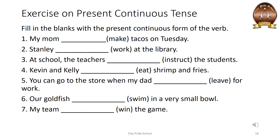Now let's test our knowledge by solving this exercise. Fill in the blanks with the present continuous form of the verb. First sentence: 'My mom dash make tacos on Tuesday.' The verb given is 'make'. What will the sentence be in present continuous tense? 'My mom is making tacos on Tuesday.' We used 'is' because 'my mom' is a singular noun. 'Make' is the main verb with ing form.